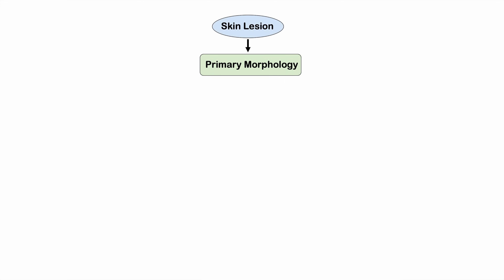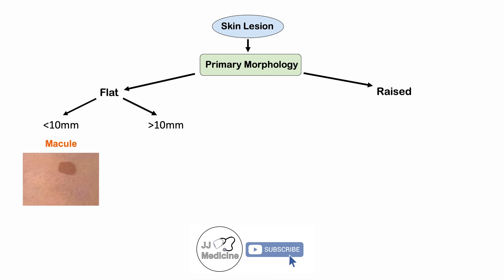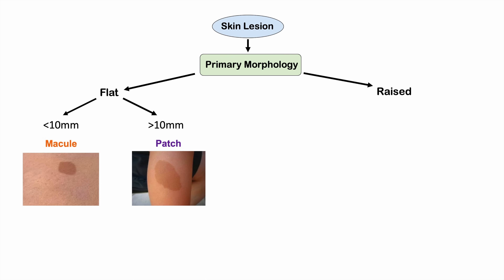We start with primary morphology by looking at whether the skin lesion is flat or raised. A flat skin lesion has no raised border — it feels in line with the rest of the skin. We then look at size using 10 millimeters as the cutoff. A flat lesion less than 10 millimeters is a macule; greater than 10 millimeters is a patch.